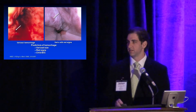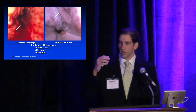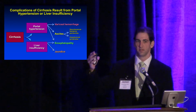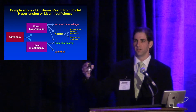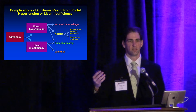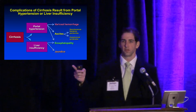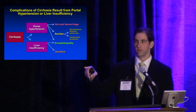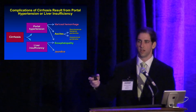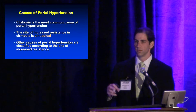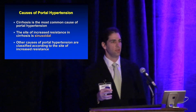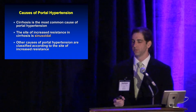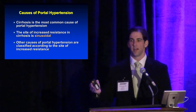From cirrhosis, complications occur predominantly from portal hypertension: varices, ascites, spontaneous bacterial peritonitis, and hepatorenal syndrome. Encephalopathy occurs both from collateral circulation developed due to portal hypertension and from liver insufficiency with altered ammonia metabolism. Jaundice is purely liver insufficiency. Cirrhosis is the most common cause of portal hypertension but not the only one. Other forms are classified by where the problem occurs: pre-hepatic, pre-sinusoidal, sinusoidal, or post-sinusoidal.